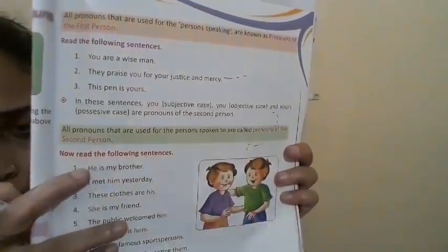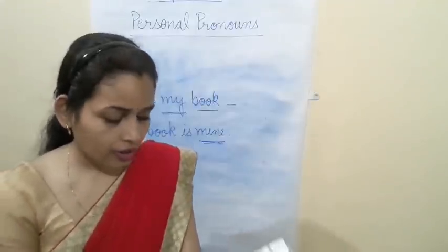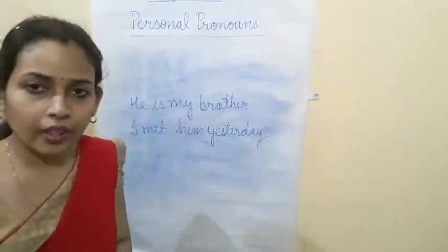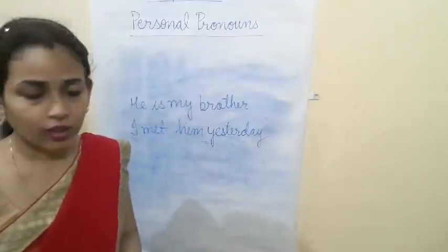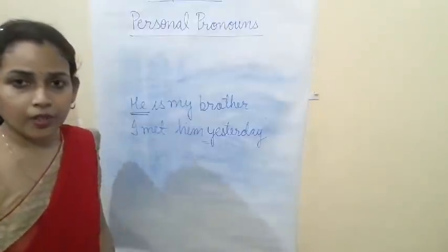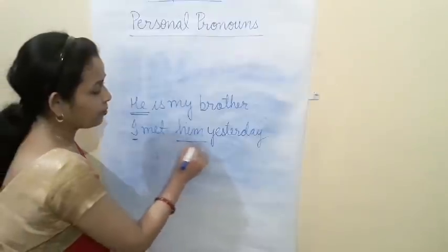Example: 'He is my brother.' Here 'he' works as a subject — it is the subjective case. After the verb, generally we get the object — that is the objective case. 'I met him yesterday' — here 'him' is in objective case. Before the verb we get the subject — that is the subjective case; after the verb we get the object — that is the objective case.